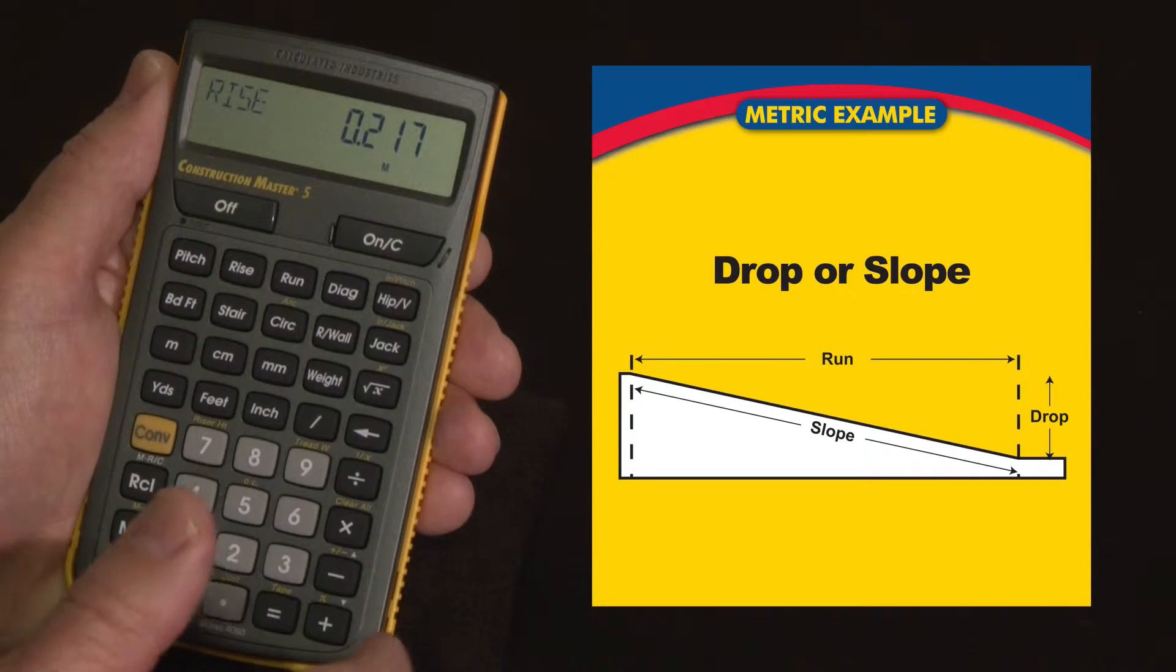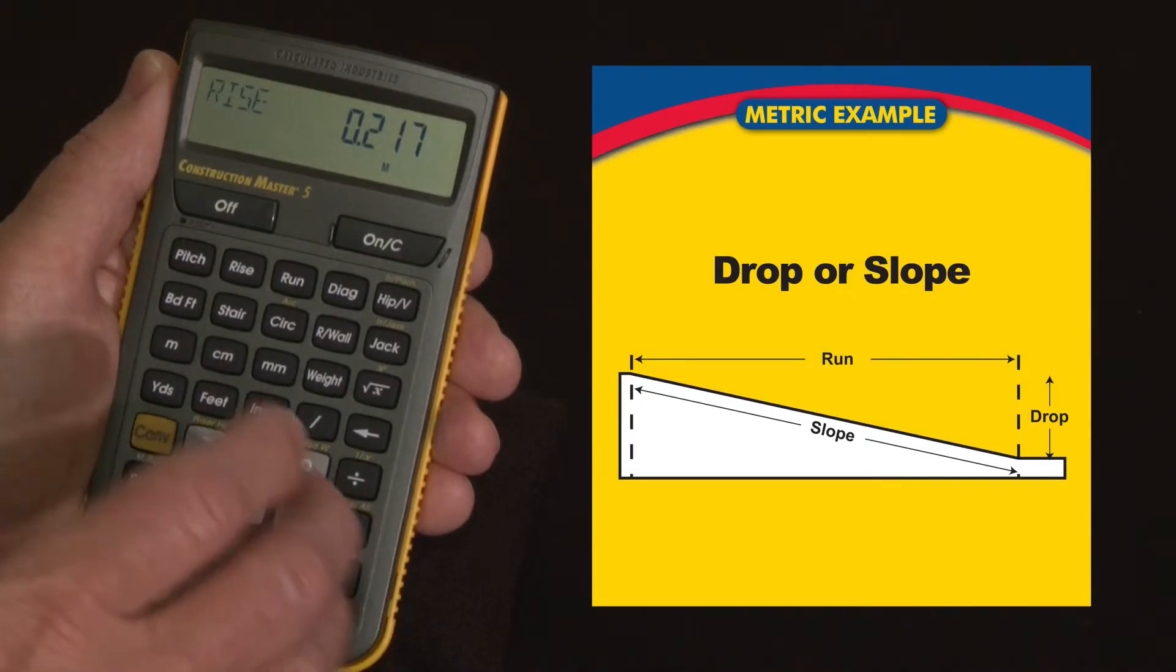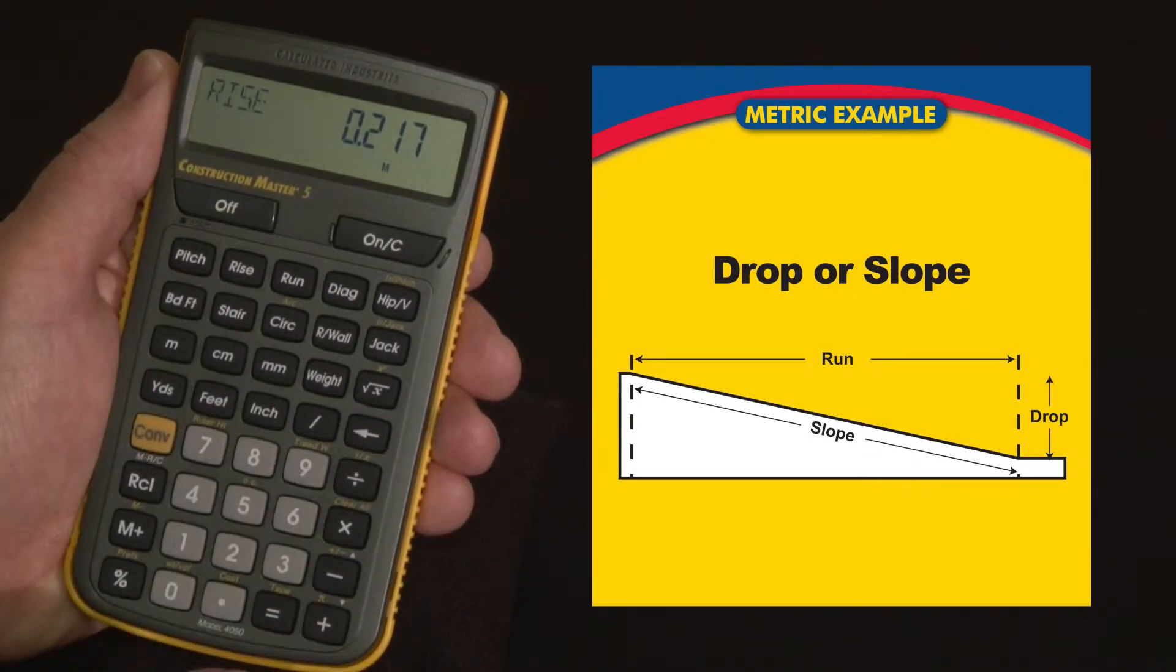And you might say well that's going to be too low, it won't match the curb or maybe there's an obstruction in the way, you don't want to dig that deep, let's try it again, let's try it with a 1 to 80 ratio.